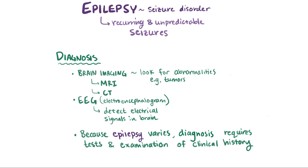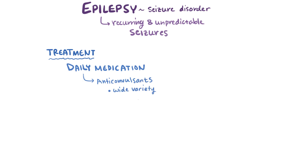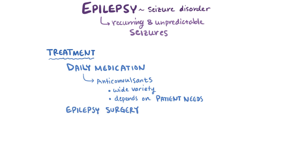Once epilepsy has been diagnosed, it is often treated with daily medication, the primary form being anticonvulsants, of which there are a wide variety of options with different targets in the brain. The choice is based on the specific needs of the patient, including factors like age, lifestyle, other health problems, and the category or subcategory of the epilepsy syndrome. Other treatment options include epilepsy surgery, where they'll remove what's thought to be causing the seizures, like a specific part of the brain or a tumor.